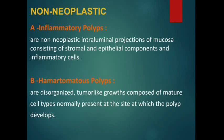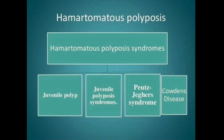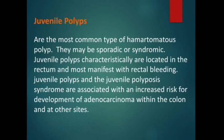The second type, hamartomatous polyps, are disorganized tumor-like growths composed of mature cell types that are normally present at the site where the polyp develops. Hamartomatous polyps are associated with juvenile polyps, juvenile polyposis syndrome, and Peutz-Jeghers syndrome. Juvenile polyps, which represent the most common type of hamartomatous polyp, may be sporadic or syndromic. They are associated with an increased risk for development of adenocarcinoma within the colon and at other sites, especially when associated with juvenile polyposis syndrome.